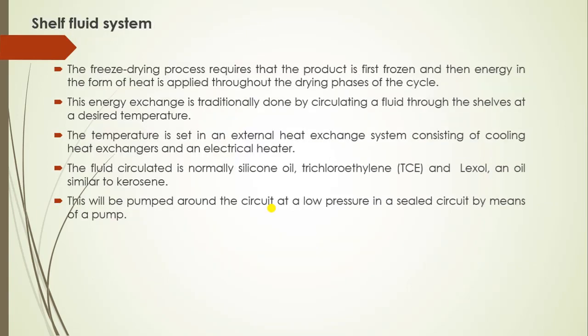Next is the cell fluid system. The freeze drying process requires that the product is first frozen and then energy in the form of heat is applied throughout the drying phase of the cycle. This energy exchange is traditionally done by circulating a fluid through the cells at a desired temperature. The temperature is set in an external heat exchange system consisting of a cooling heat exchanger and electric heater. The fluid circulated is generally silicon oil, trichloroethylene, or Lexone, pumped around the circuit at low pressure in a sealed circuit by means of a pump.